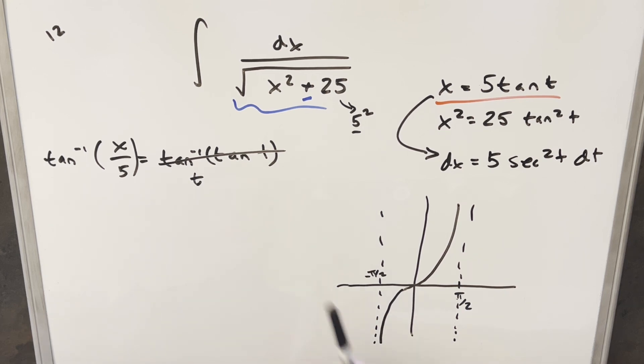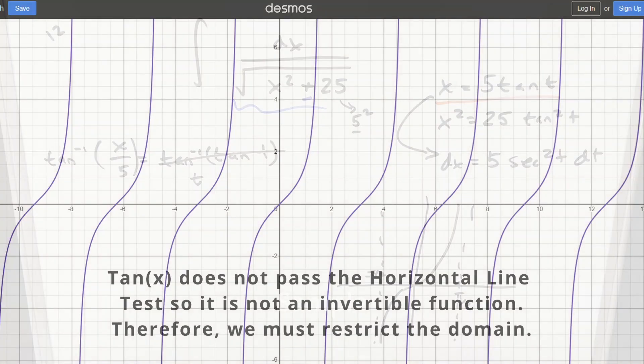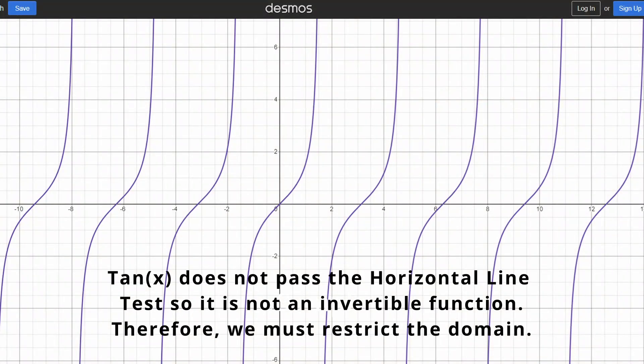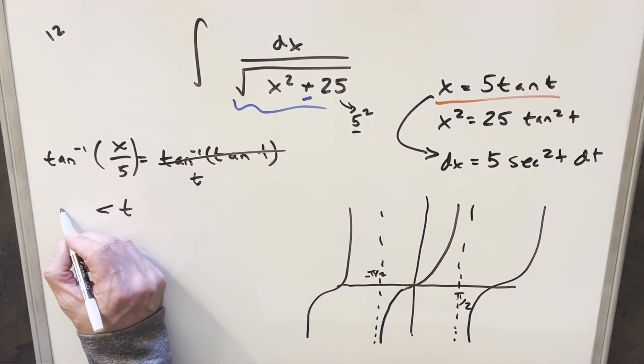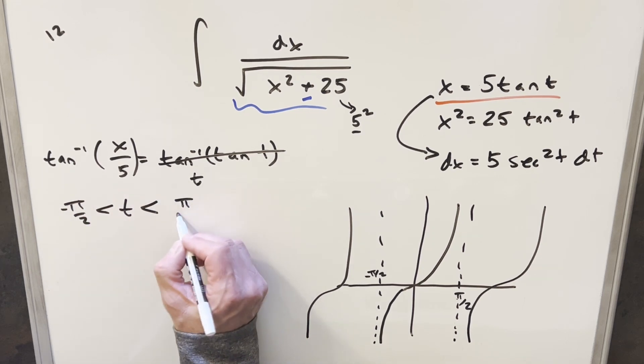Now, in this region here, this is exactly true. This always works. But the thing with tangent is this curve just kind of repeats over and over again forever in both directions. So really, for this to work, we really need to restrict t. So we need t that's going to be between minus pi over 2 and pi over 2.